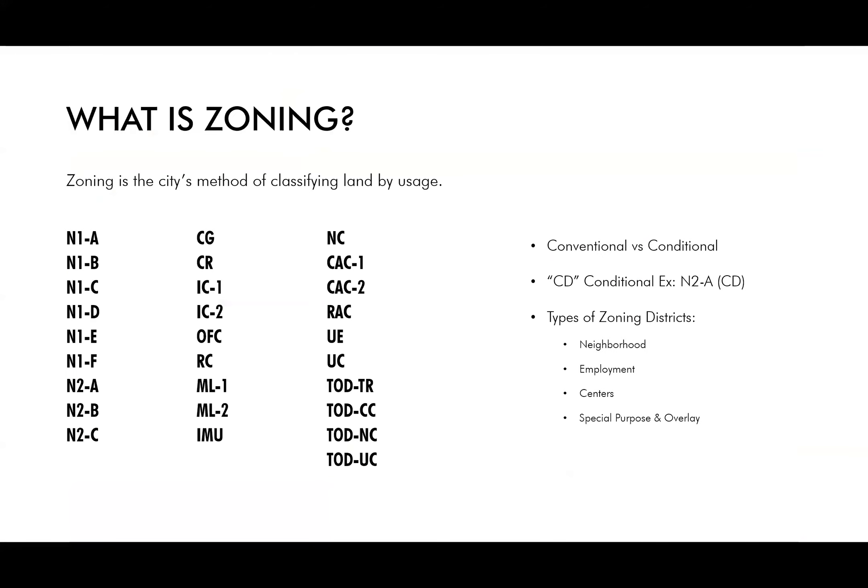So what is zoning? Why are we having a community meeting this evening? What are zoning districts, and what are the types of zoning districts? Zoning is a city's method of classifying land by usage. It promotes development in a smart, reliable fashion. This chart shows current zoning districts under the City of Charlotte Unified Development Ordinance, from least intensive place types or zoning districts to the most.